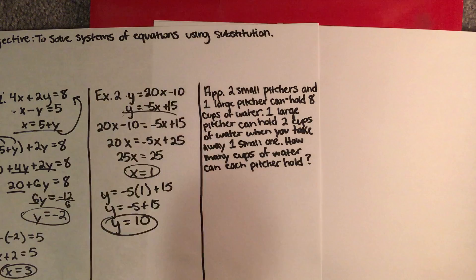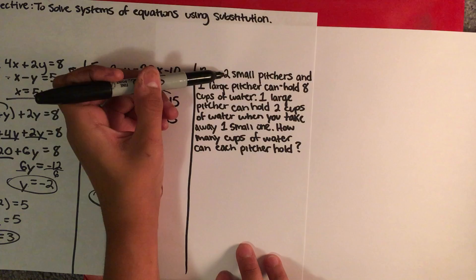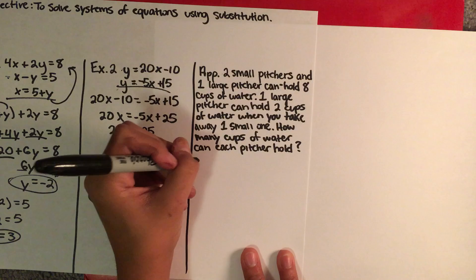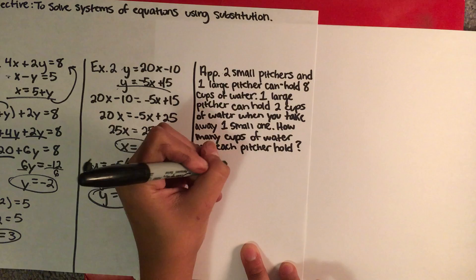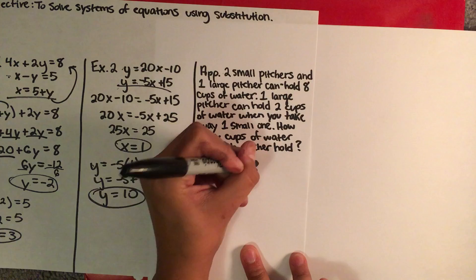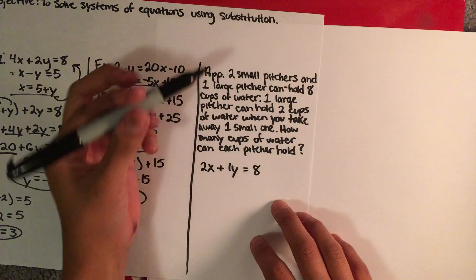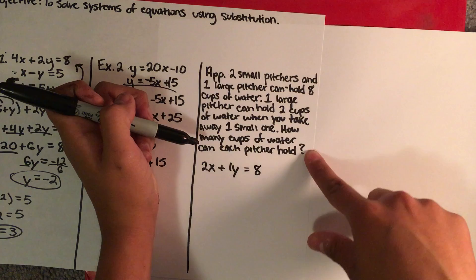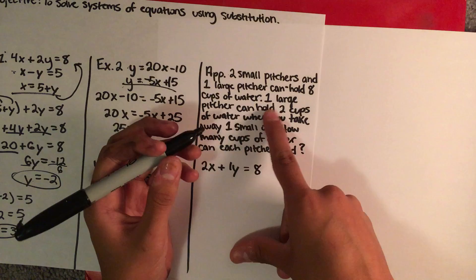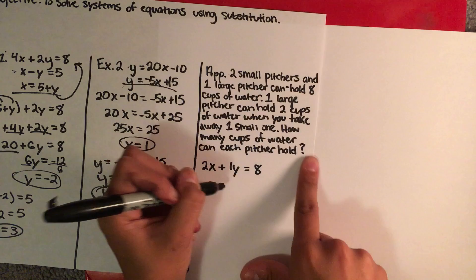Your third way is when substitution is applied to a word problem. In this case, you have two small pitchers and one large pitcher that can hold 8 cups of water. One large pitcher can hold 2 cups of water when you take away one small one. How many cups of water can each pitcher hold? Your first equation comes from the small and large pitchers adding up to 8 cups total. Your second equation comes from finding how many cups remain after taking a small pitcher away from a large one, which equals 2.